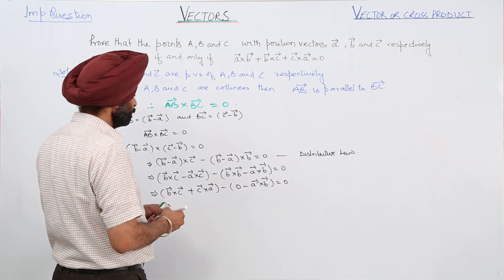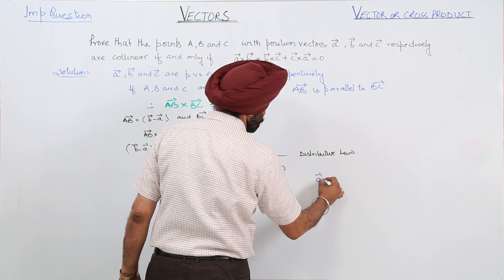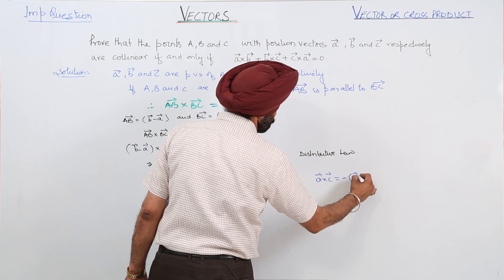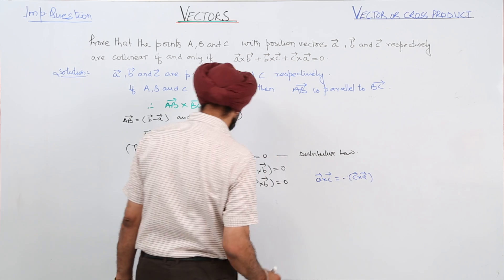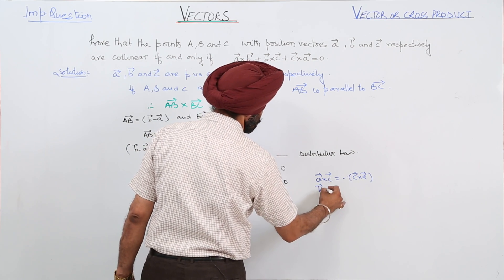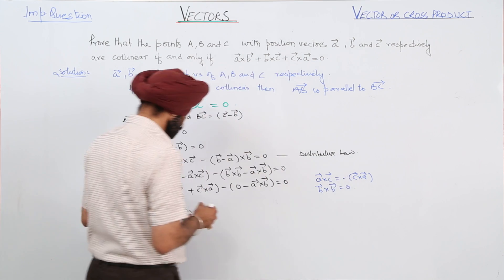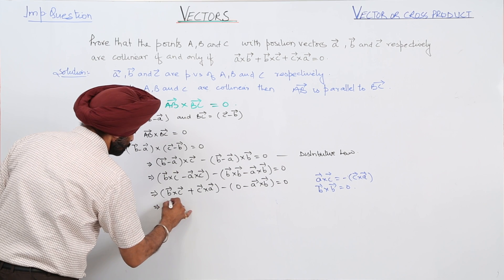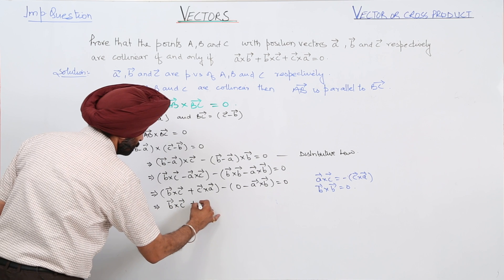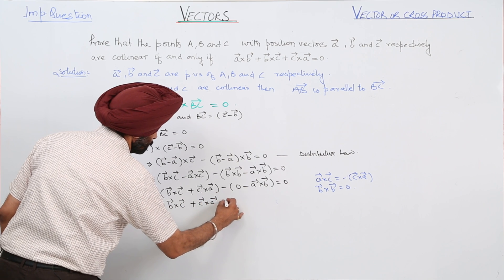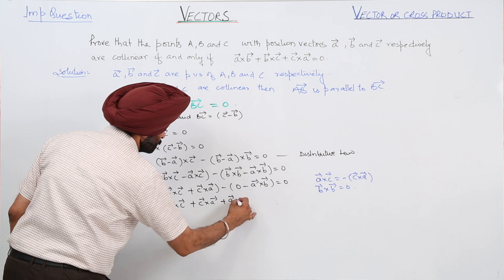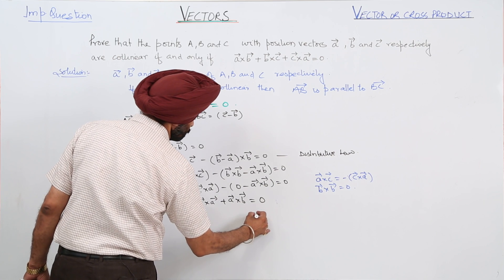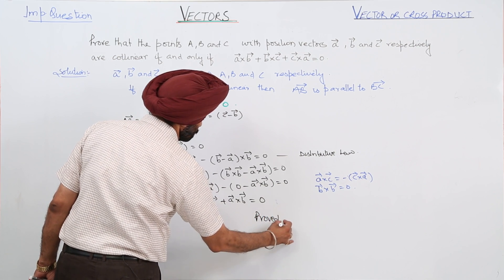Now, what we have changed here: vector A cross vector C is equal to the negative of vector C cross vector A, and vector B cross vector B is equal to zero. This gives vector B cross vector C plus vector C cross vector A plus vector A cross vector B is equal to zero. Proved.